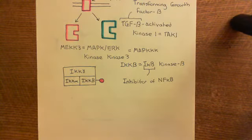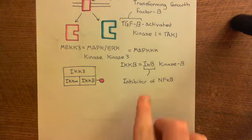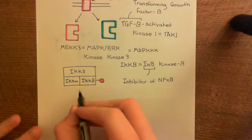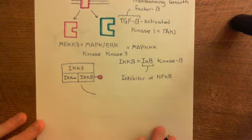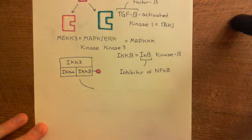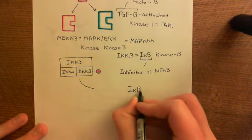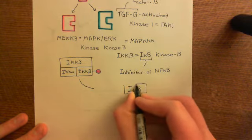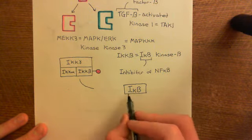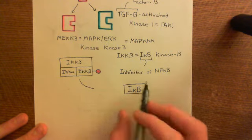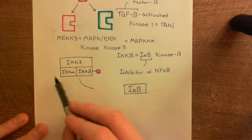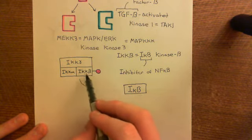Once this protein complex is activated - with the phosphate group on IKK-beta - it is going to phosphorylate and inactivate the inhibitor of κB protein. To understand the significance of that, we need to understand what the inhibitor of κB does. There is an inhibitor of NF-κB protein, and there are multiple different types. We'll talk about the specific types targeted by this activated enzyme complex in a moment.